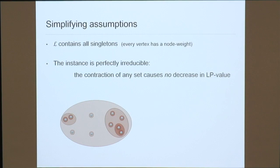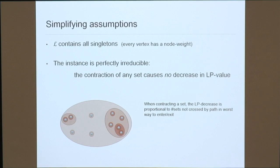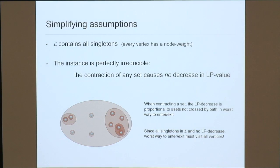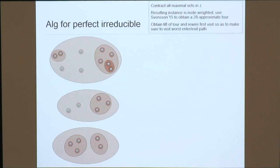If there is no LP decrease when contracting any set, then the worst-case shortest path through any set must cross everything inside. So for each set, there exist worst-case entry/exit vertices such that the shortest path between them visits everything. This is useful — those shortest paths efficiently visit everything.